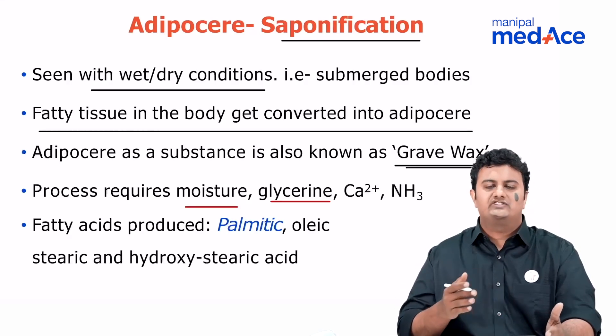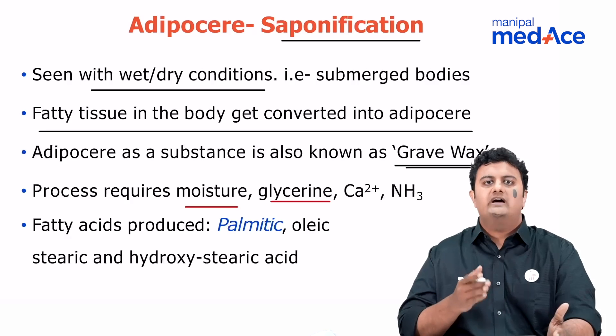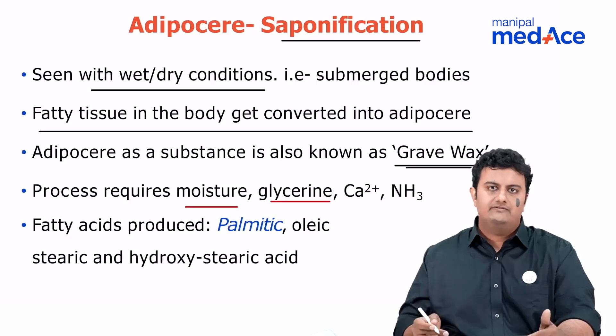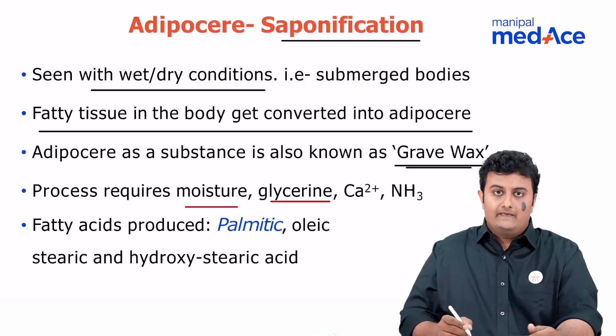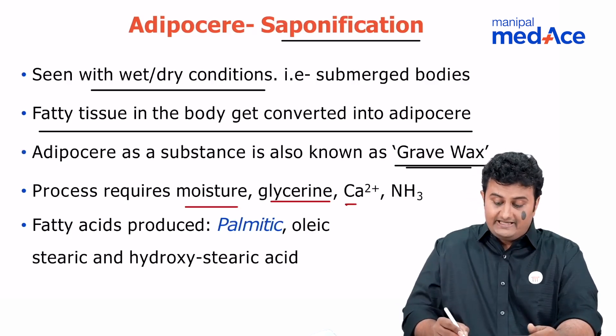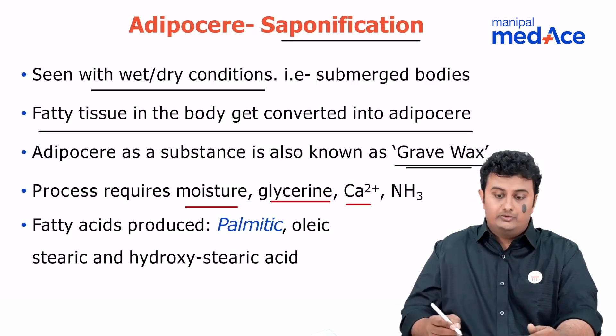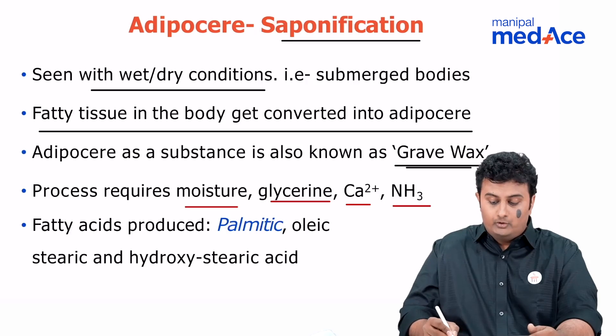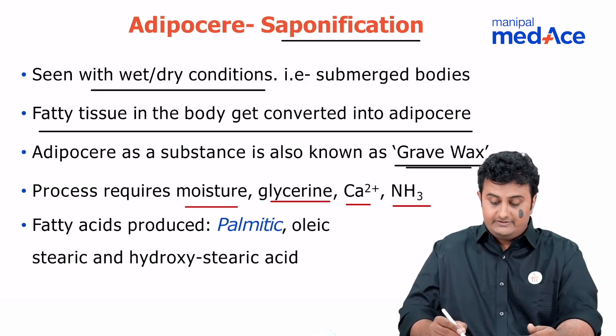Essentially what is happening is hydrogenation of fats. Another very important thing that you need to have is calcium, along with which you need to have ammonia — calcium and ammonia, very important.